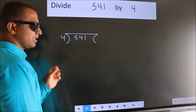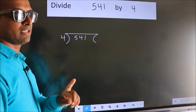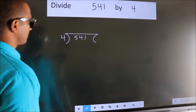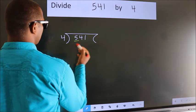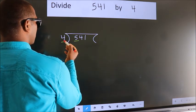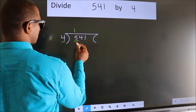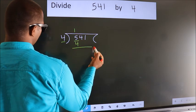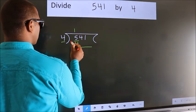This is your step 1. Next, here we have 5, here 4. A number close to 5 in 4 table is 4 once 4. Now, we should subtract.